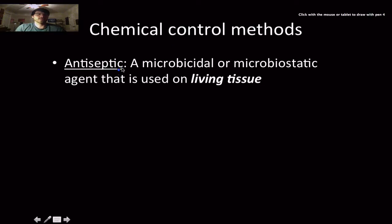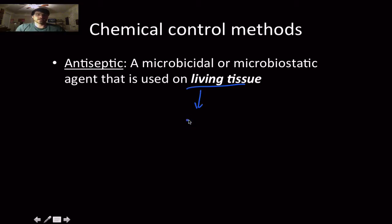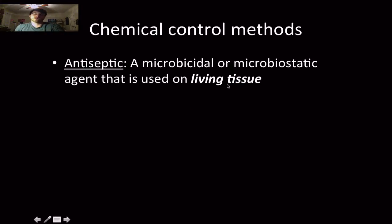So, chemical control methods. An antiseptic is a microbicidal or microbistatic agent that is used on living tissue. Examples of this would be benzalkonium chloride on a cut, betadine iodine, or hydrogen peroxide — anything that you put on a cut that you can use on living tissue without it being damaging.